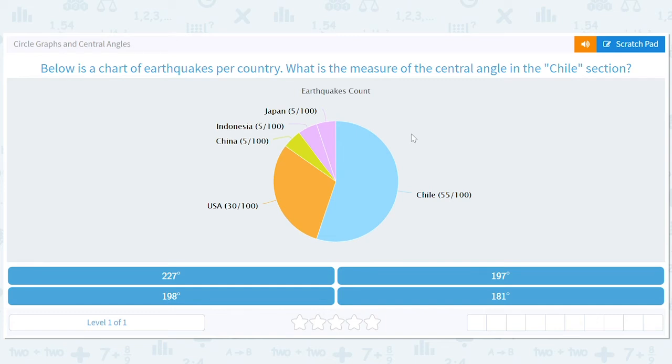Circle graphs and central angles. This is really fun because I love these graphs where you mouse over them and they have these numbers. That's really cool. So these are all the earthquakes and this is how many of them happened in the different countries. And we want to know the measure of Chile.